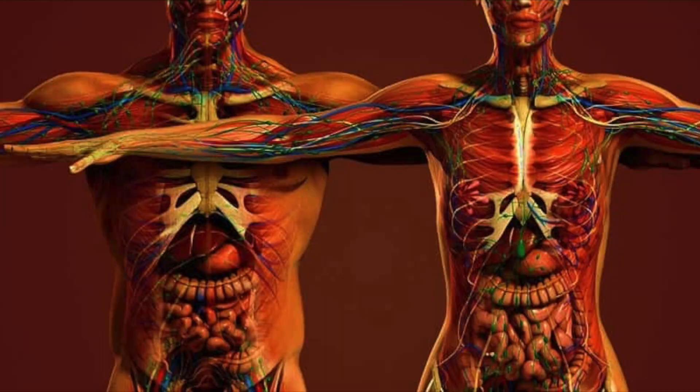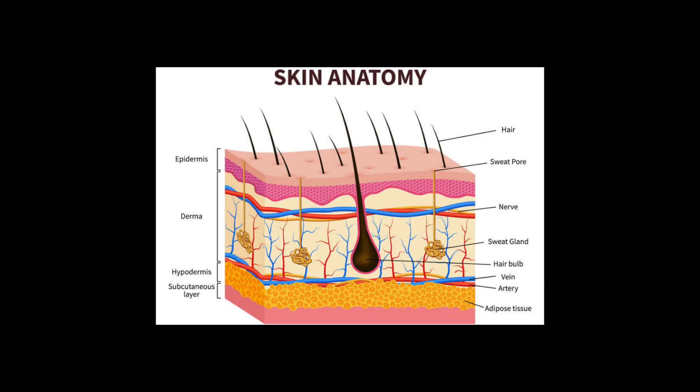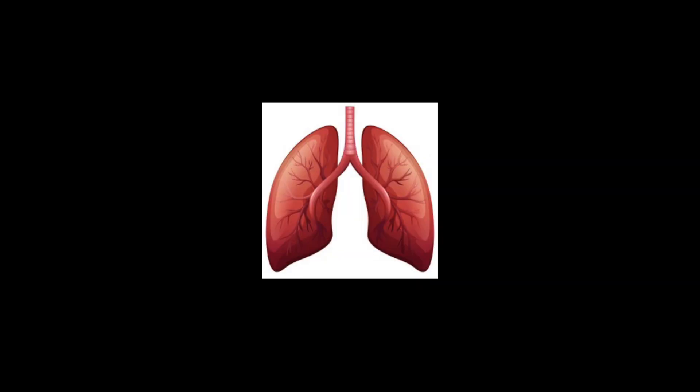As many of you already know, your body has a specialized, organized system that performs various jobs inside of it, called your organs, which does have a tone and thus a vibration. Some common organs are the skin, heart, liver, and lungs. Now, your cells which make up your organs also have a specialized, organized system that also performs various jobs inside of it, called organelles.